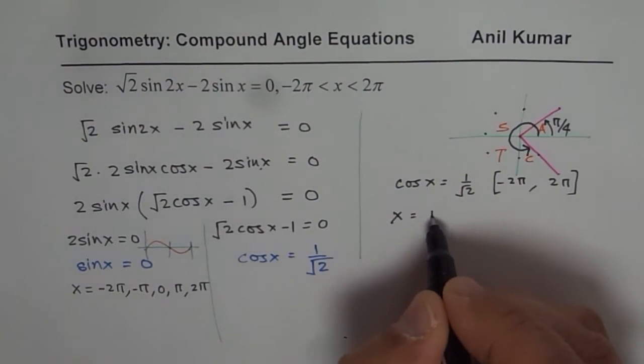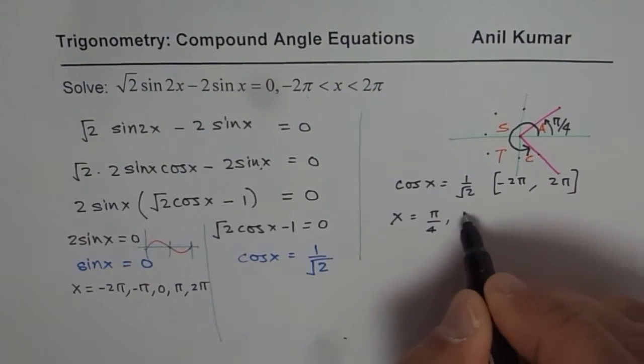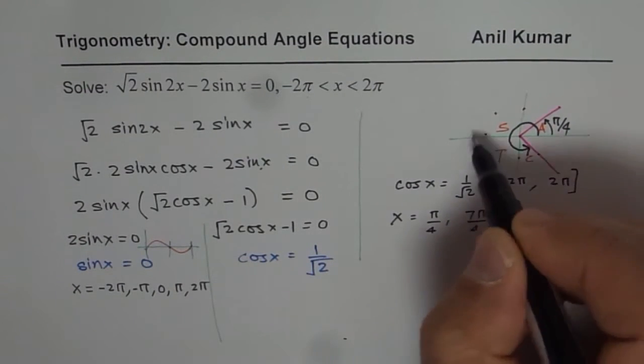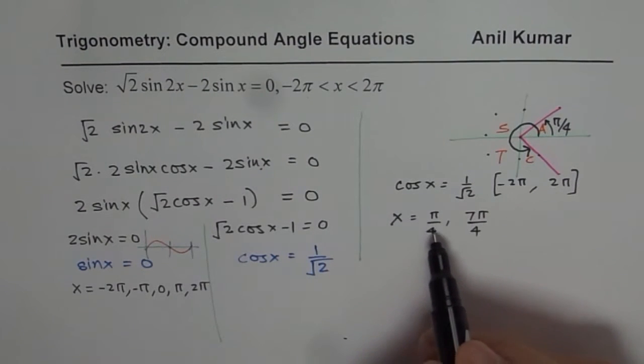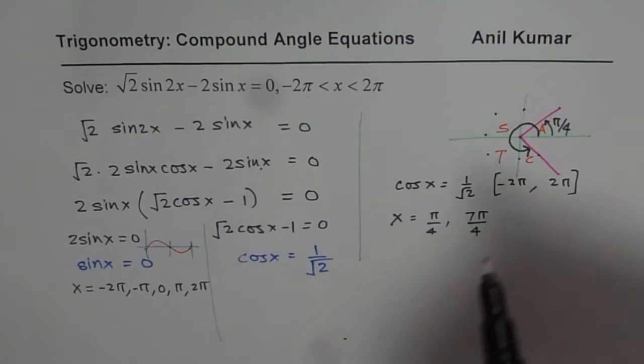Now you could also go in counter, in clockwise, so minus, right? Or you can take away 2π from these to get other answers. So if you move like this,